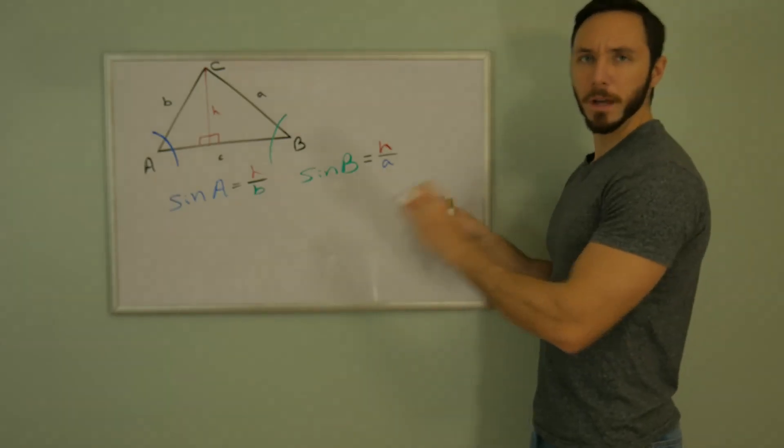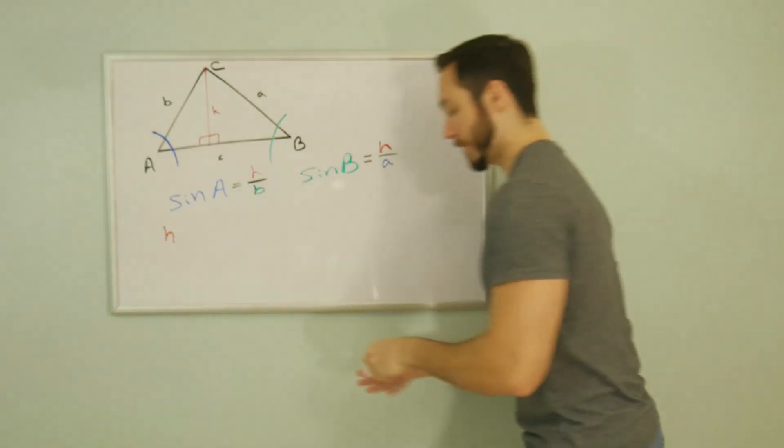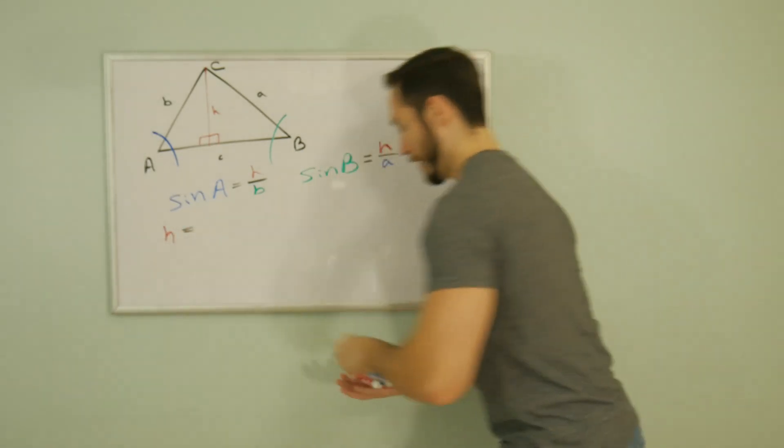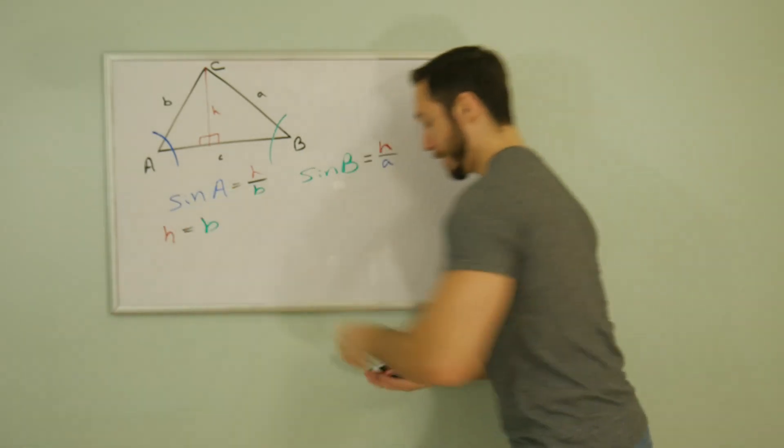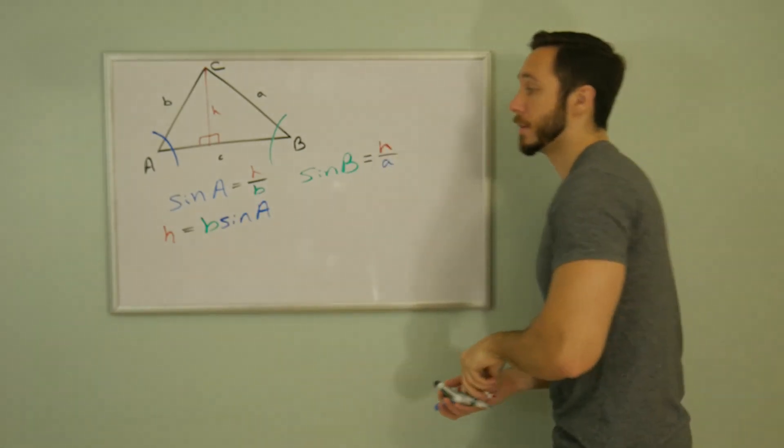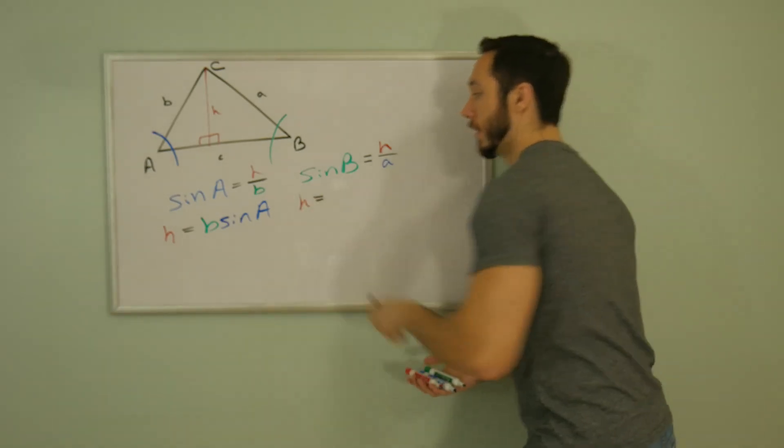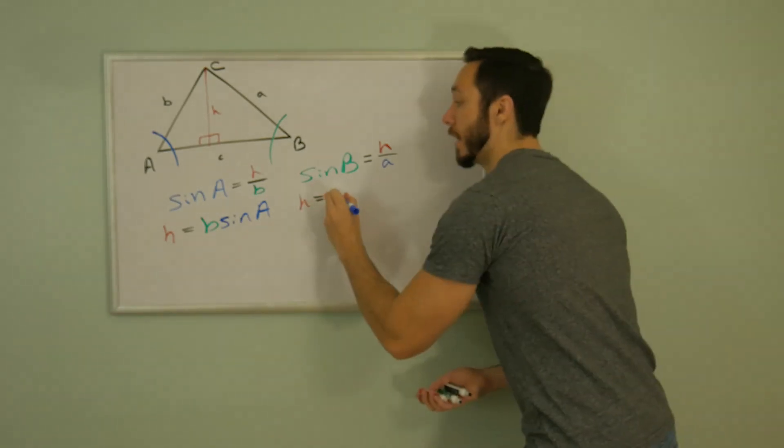You know, I see an H in both. How about I solve for H in both of these equations? This one turns to H is equal to B times sine of angle A. Whereas the other one turns into A times sine of angle B.